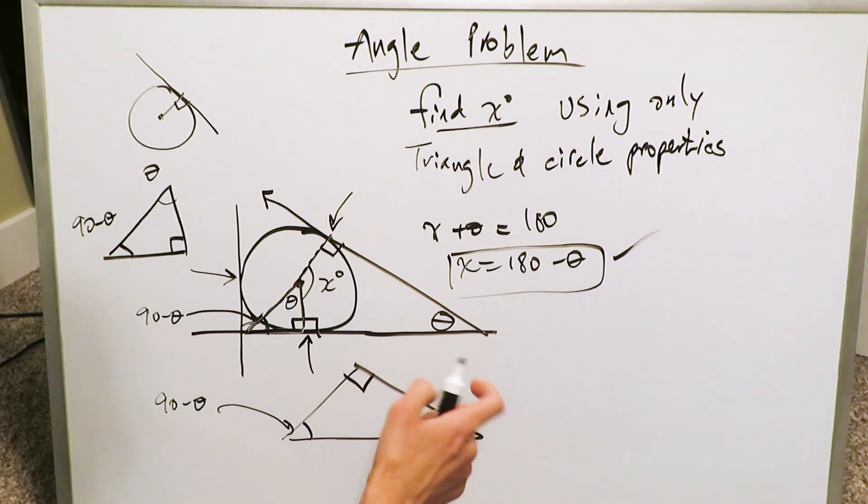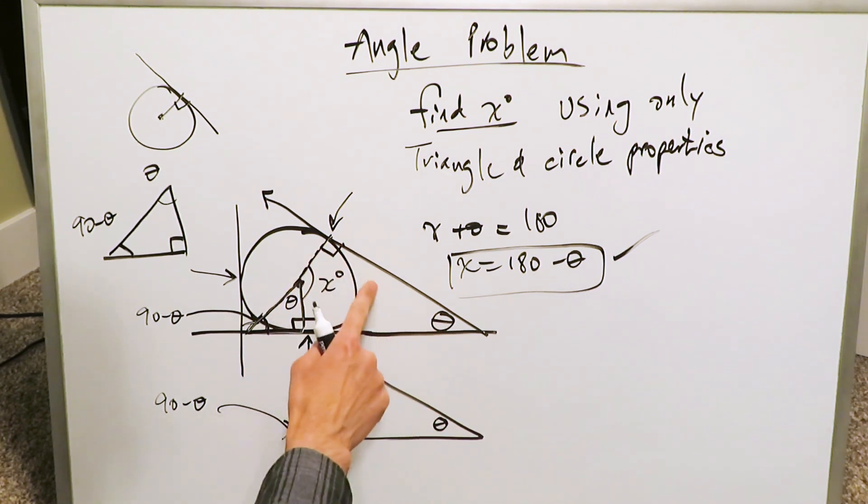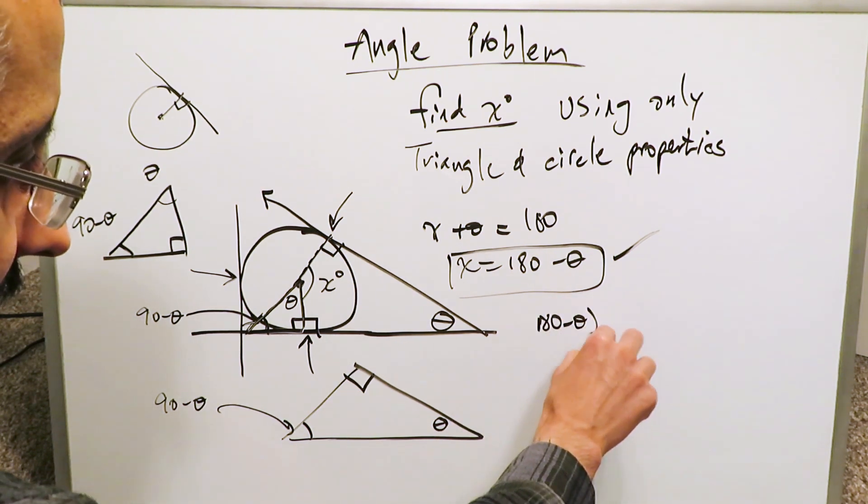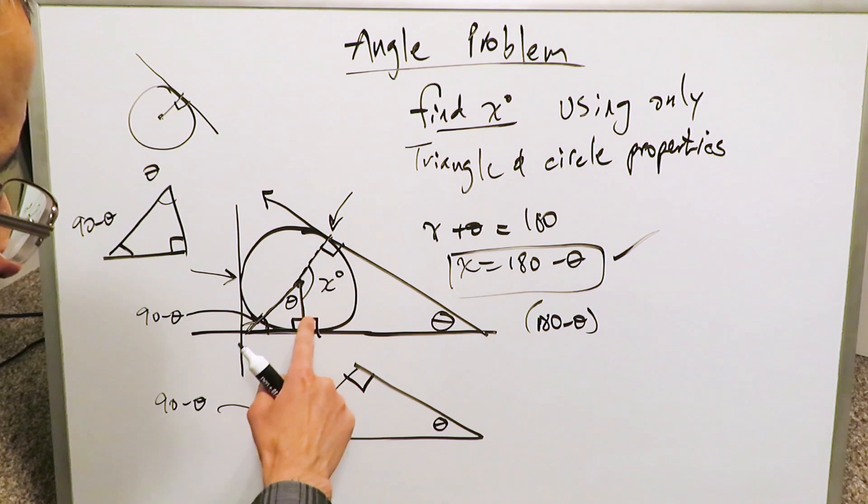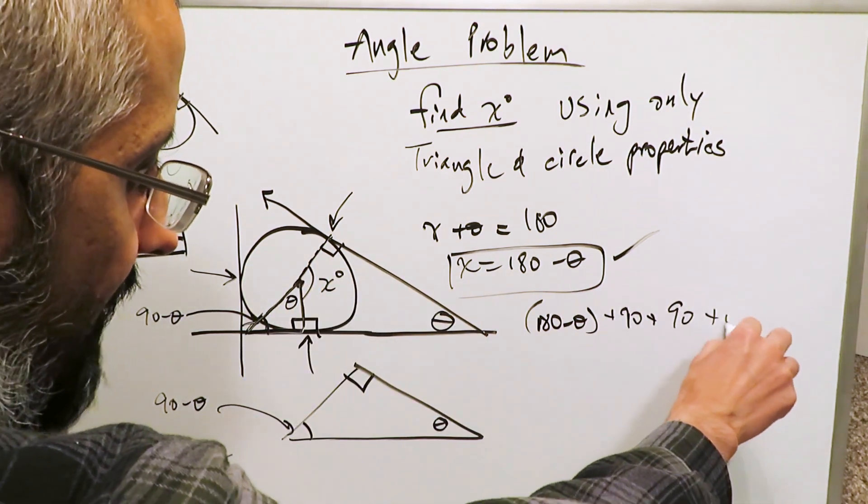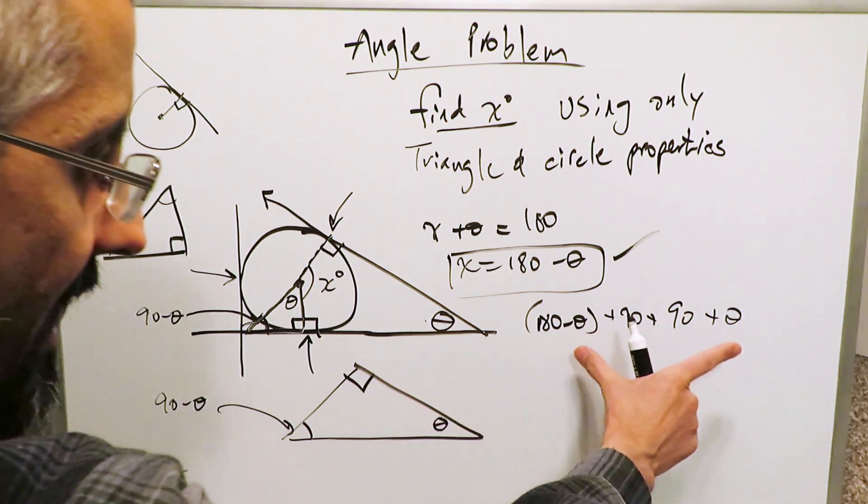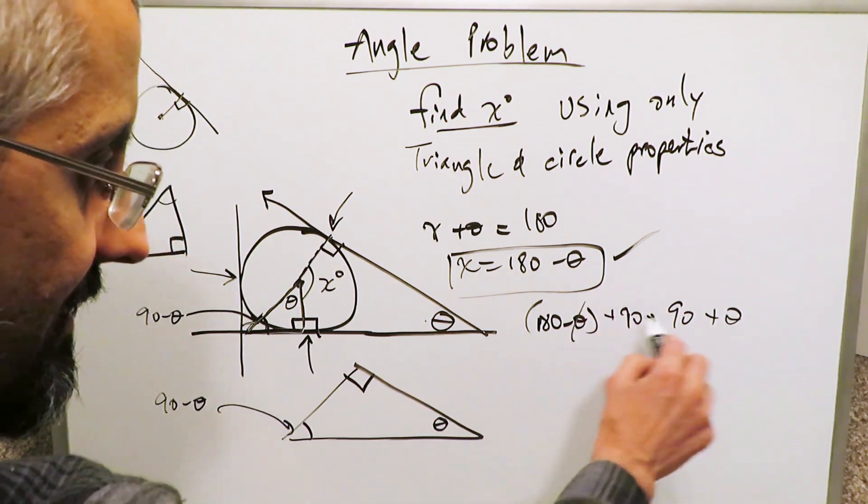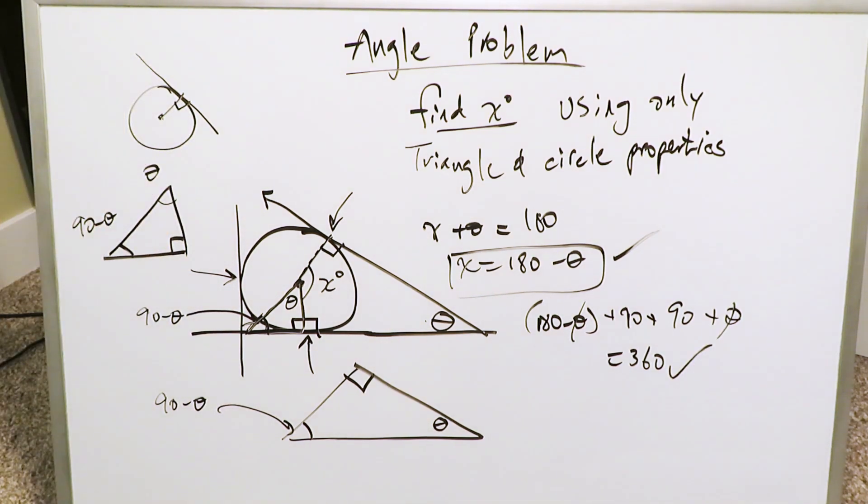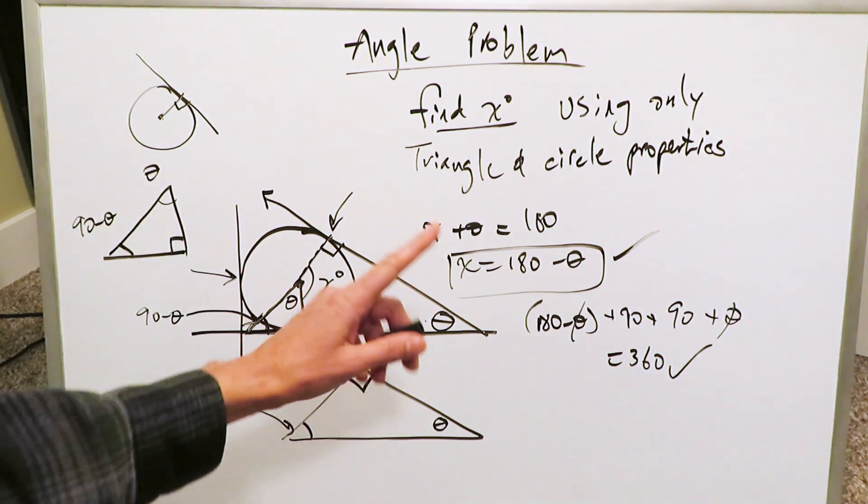And if you were to do a good check, this little quadrilateral, if you add all these four angles, they'll equal 360. One angle is 180 minus theta, which we have just discovered. You have a 90 right here. Then you have another 90. And then you have lastly this theta. If you add all of these, you'll get 360 because these will cancel out. You'll have 360 and our check shows that this angle x is right.